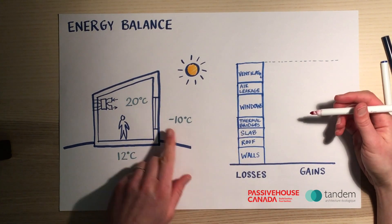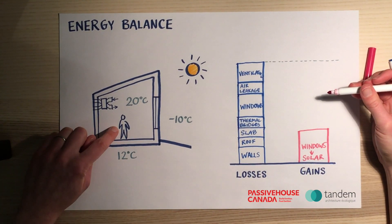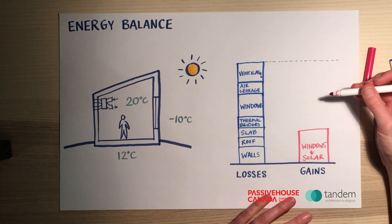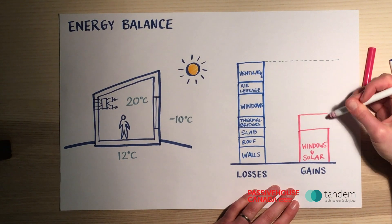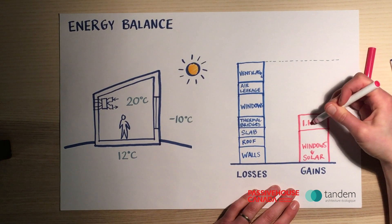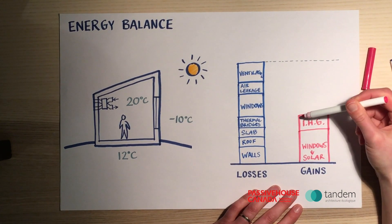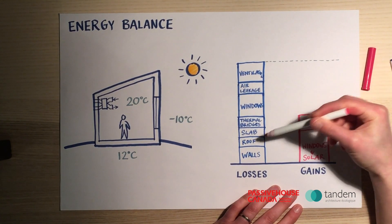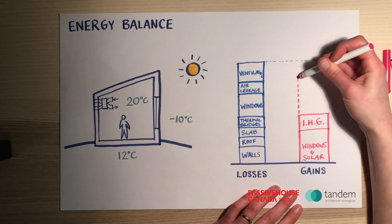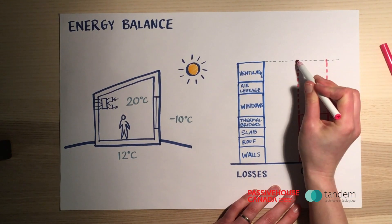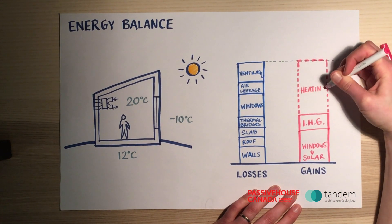We will have solar gains attributed to the windows. We will have interior heat gains, which are any heat gains associated with the human beings in the building — they all give off heat — and any waste heat from equipment, building equipment, appliances, and lighting. The rest of the gains will be balanced out by the heating system, whose job is to compensate for the difference between losses and gains.